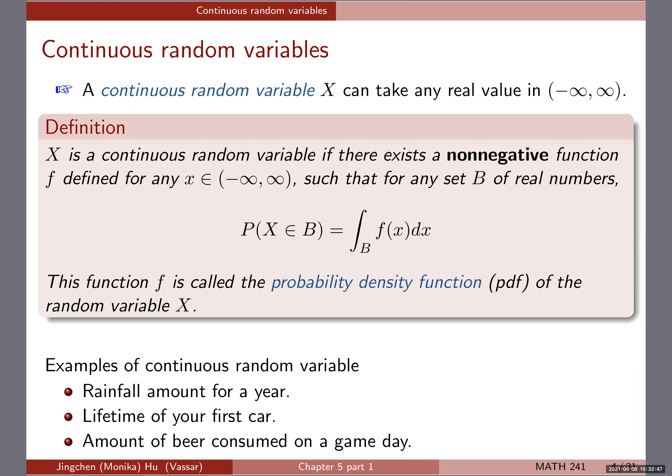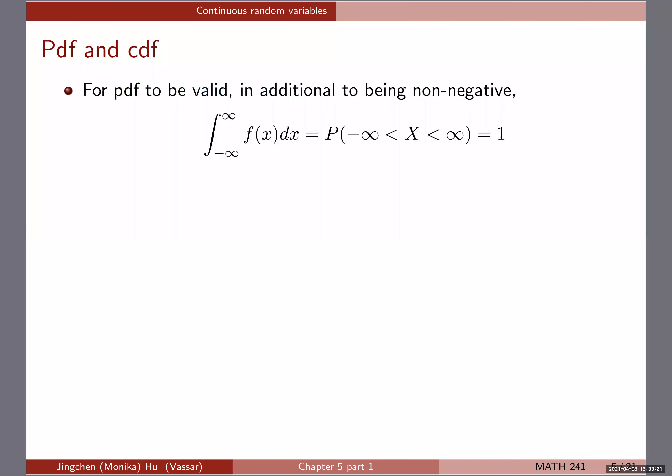Some examples of continuous random variables: rainfall amount for a year, the lifetime of your first car, and amount of beer consumed on a game day. All of these random variables can take any value on the real line. In fact, lifetime, amount of beer, and rainfall amount can only take positive values, but regardless they can take an infinite number of possible values, which is why we define them as continuous random variables.